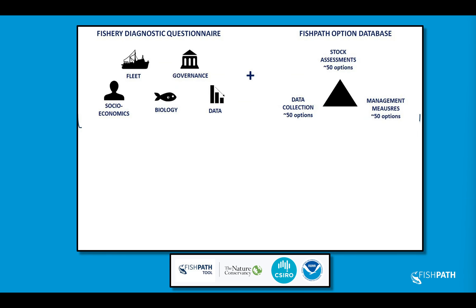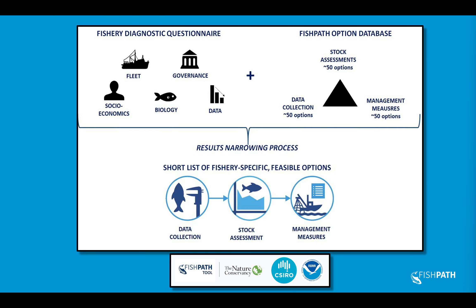The tool itself consists of a questionnaire comprising three sections: data collection, stock assessment, and management measures. All of these incorporate multiple sources of knowledge of the fishery in question. When you go through the questionnaire, it will provide you with three short lists of feasible options for each of these sections — a list of data collection options, stock assessment options, and management measures — along with various criteria and caveats associated with those options based on your answers.